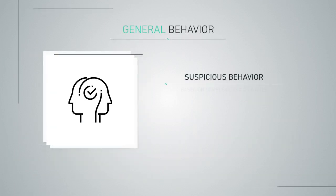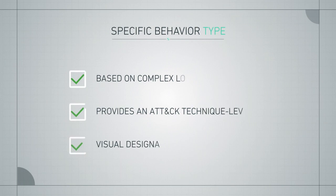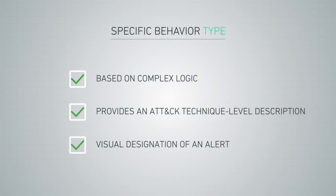When the product alerts on suspicious behavior based on reported complex logic or a rule, it is given a general behavior type. This type of alert indicates anomalous, suspicious behavior but does not provide specific details. When the product detects suspicious behavior and provides a specific description of the activity, it is given a specific behavior type.